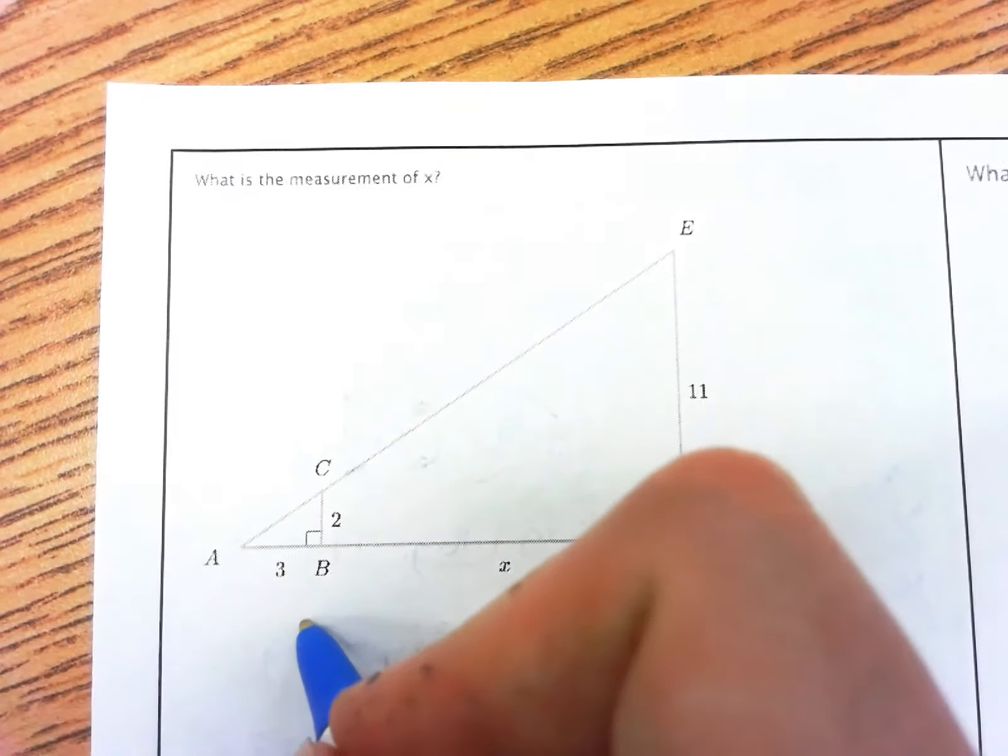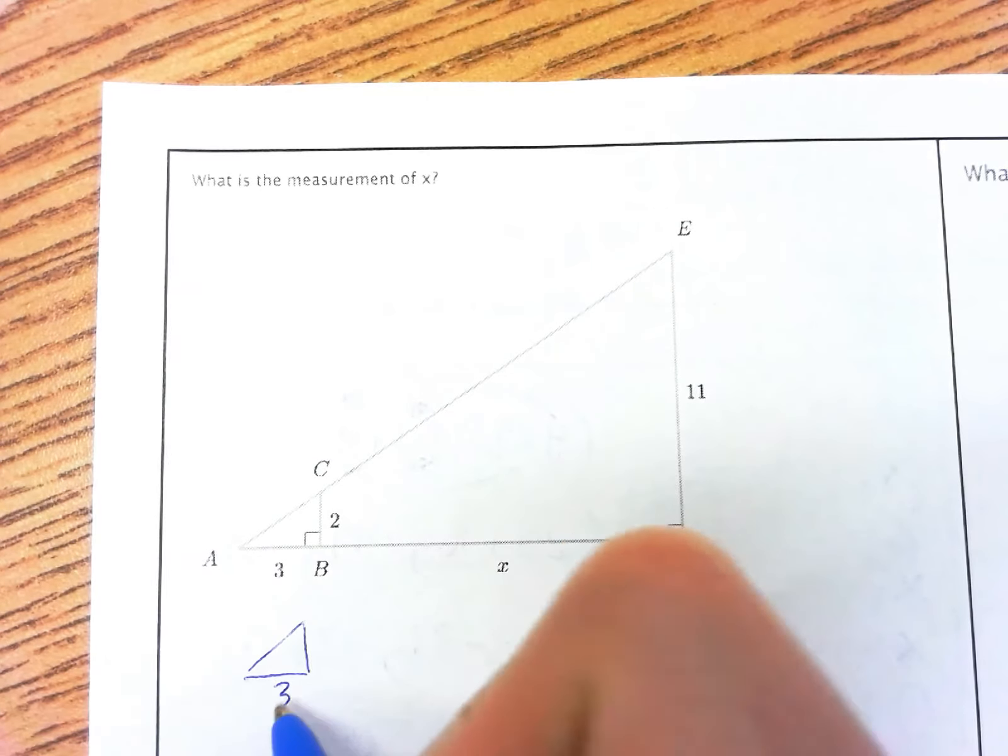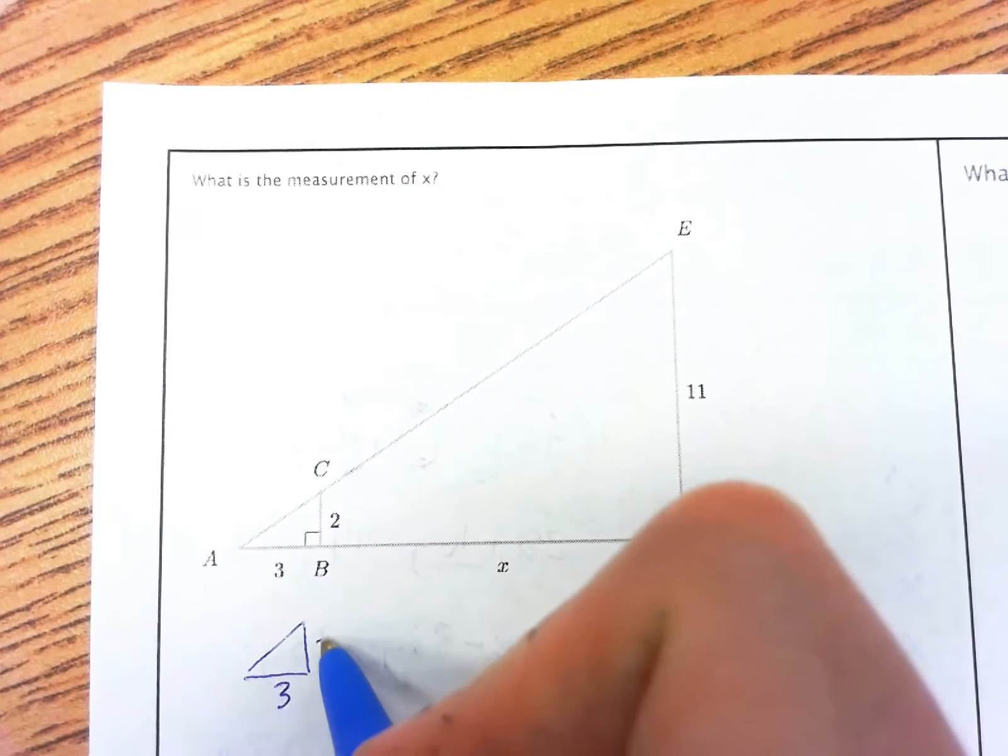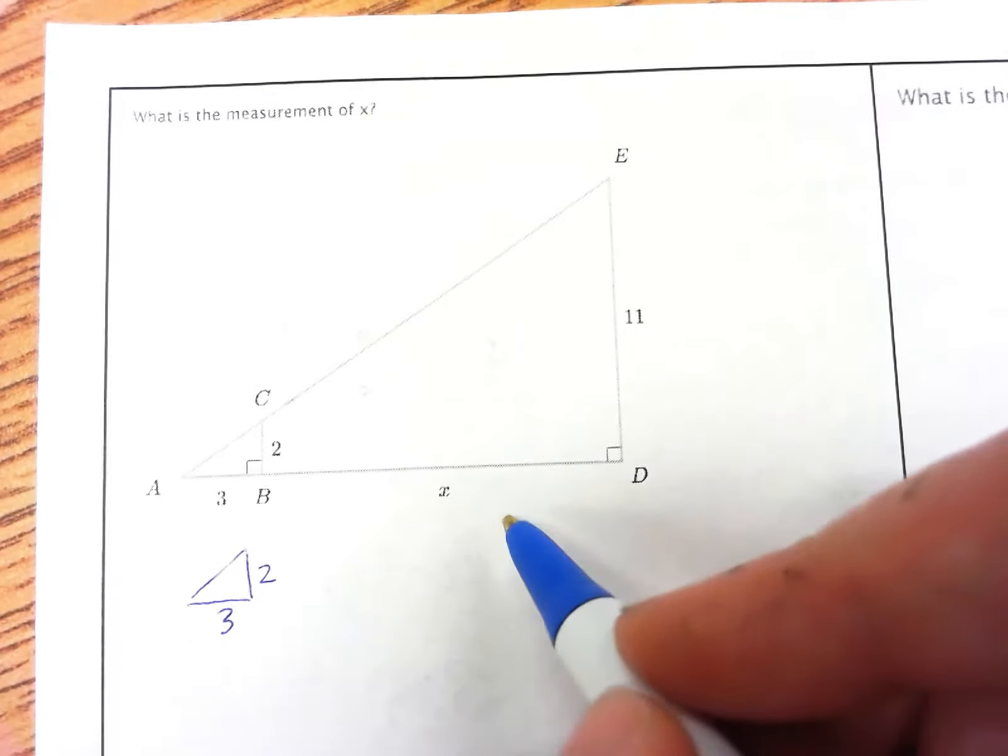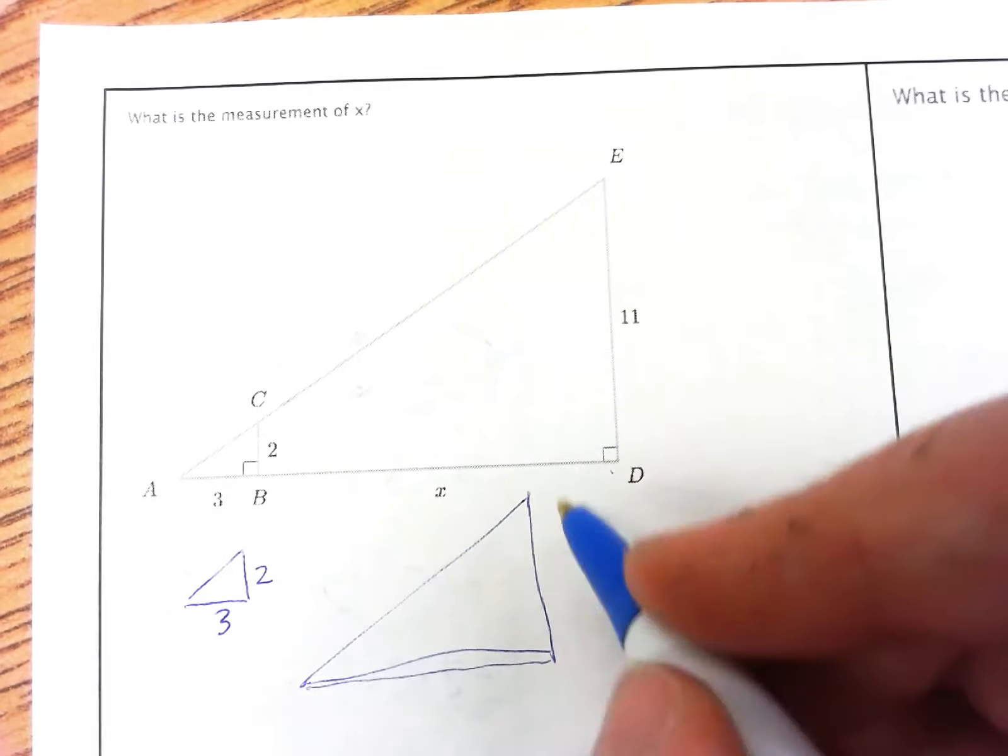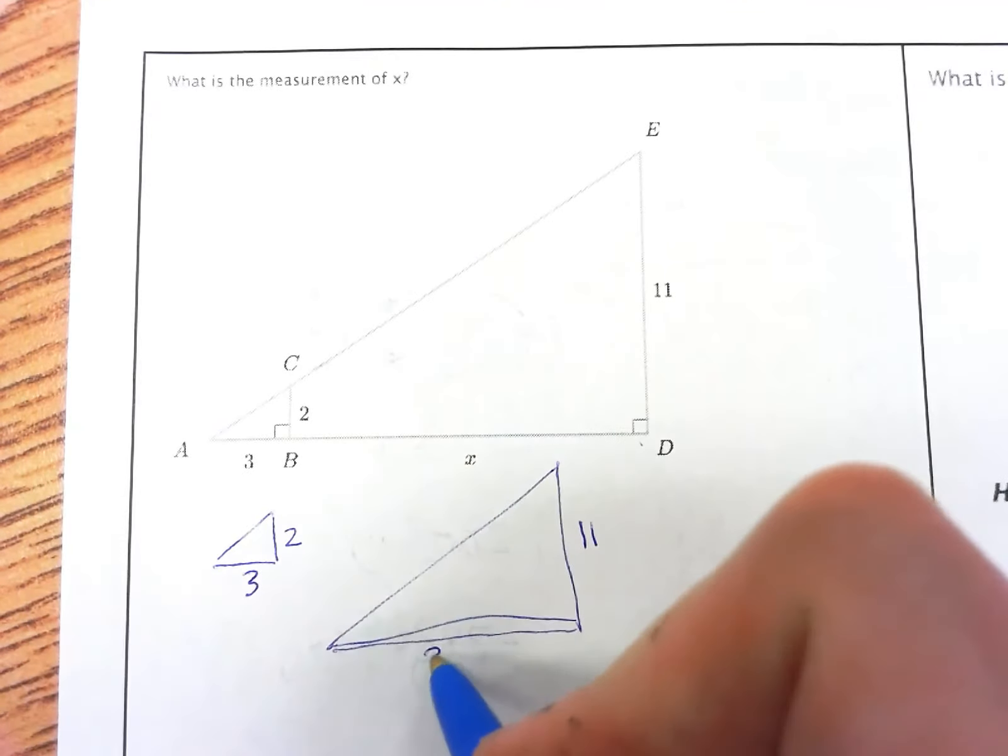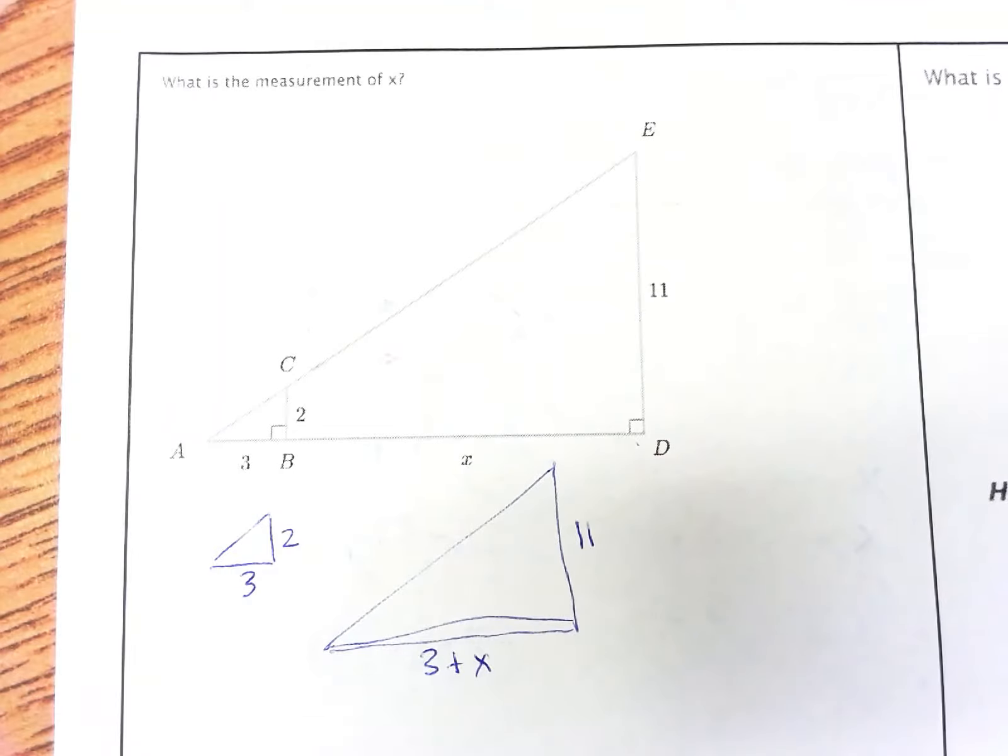So I'm going to draw my small triangle first, and the small triangle is going to be 3 on the base and 2 on the height. And then my larger triangle is going to be 11 on the height, and then the base is 3 plus x. So 3 plus x right here would be the base.